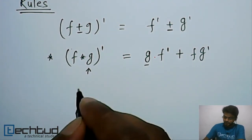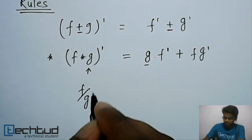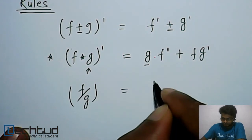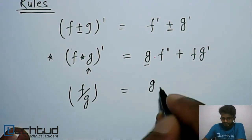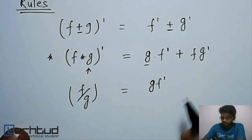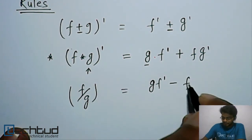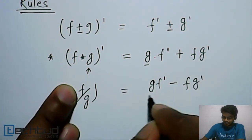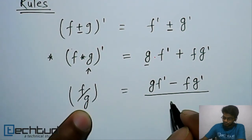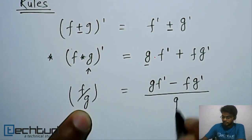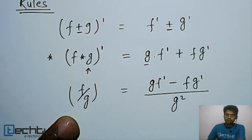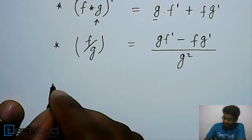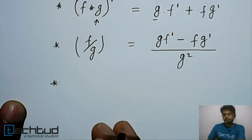Similarly, for division, if we have f divided by g: first we keep g constant and differentiate f to get f', then minus f times the derivative of the denominator g', all divided by g squared — the square of the denominator. This is the quotient rule.